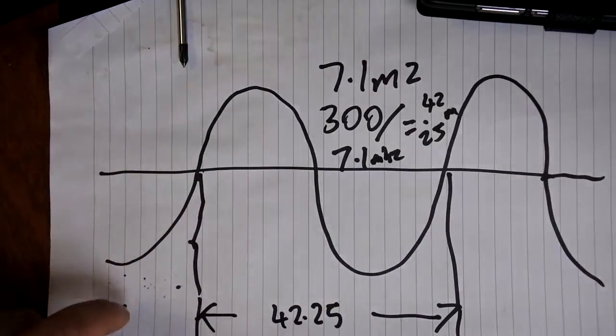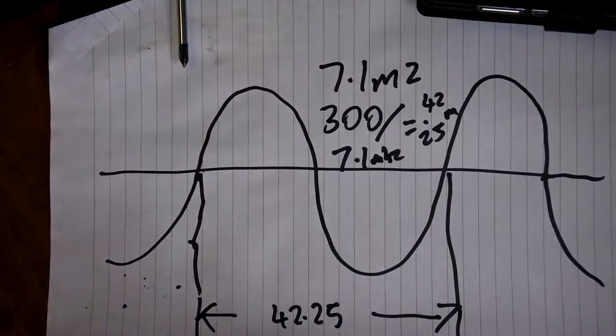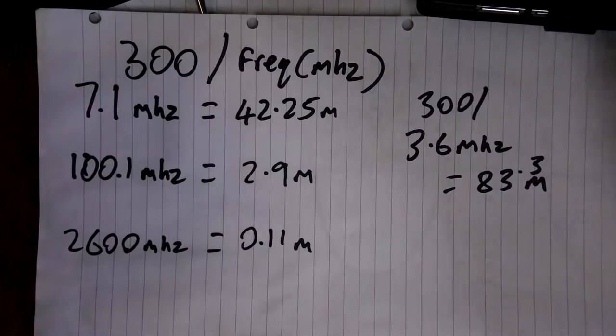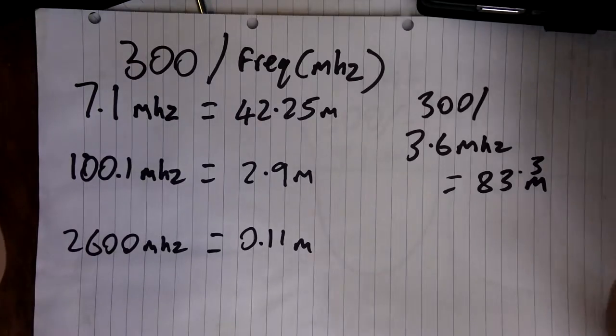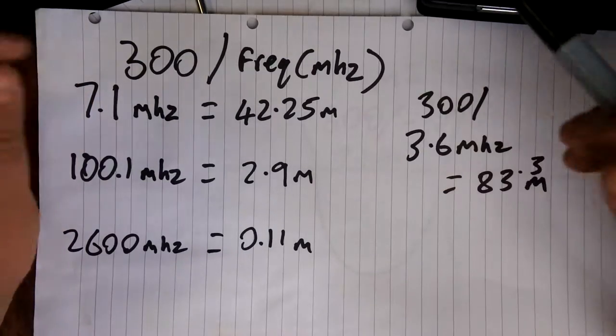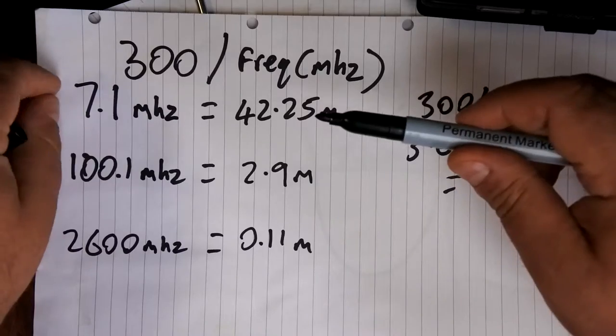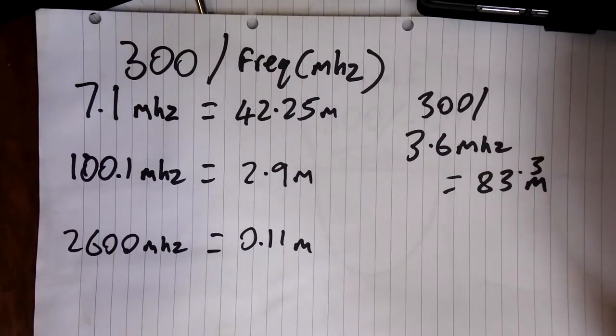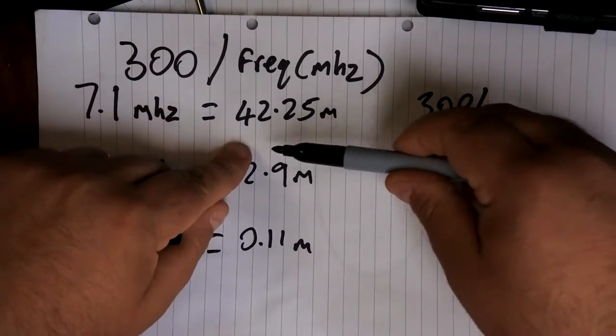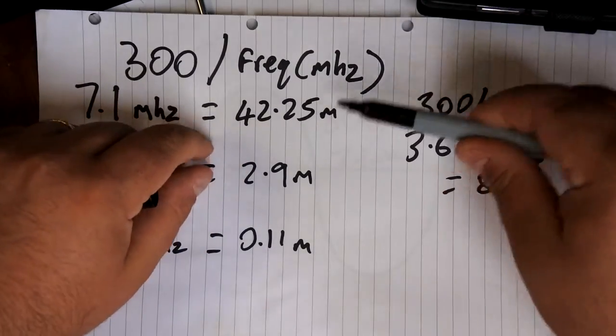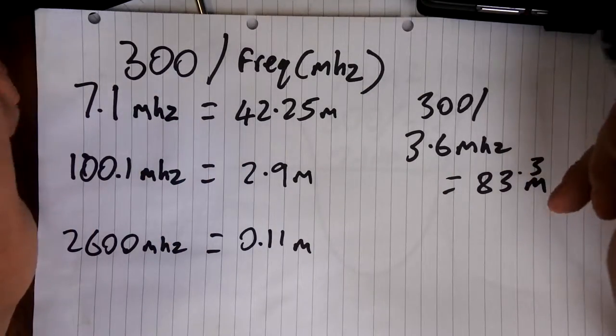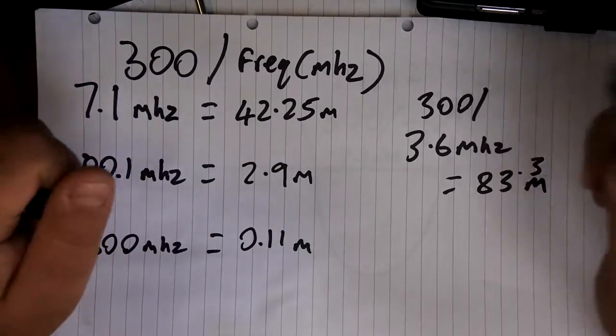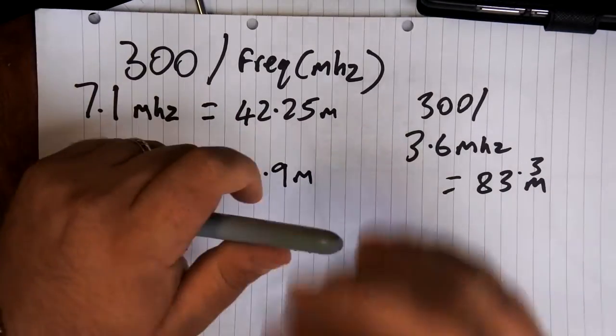So, moving on to the antenna side of things. The theory is that if you want to dissipate a radio signal at 7.1 megahertz with maximum efficiency, your antenna would need to be 42.25 meters long. What happens if it isn't is two things?